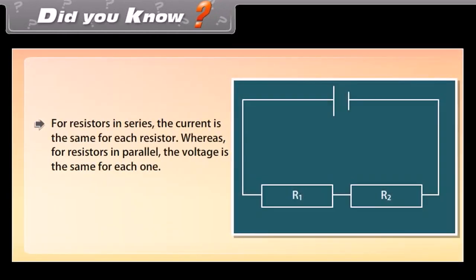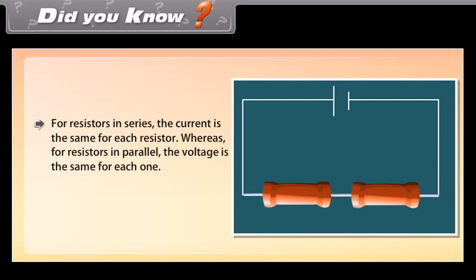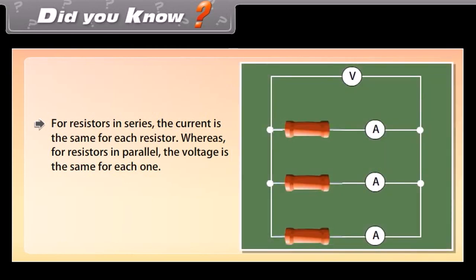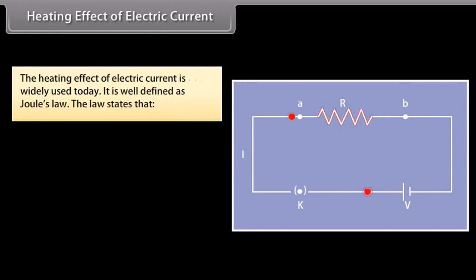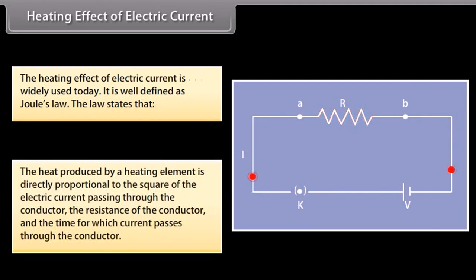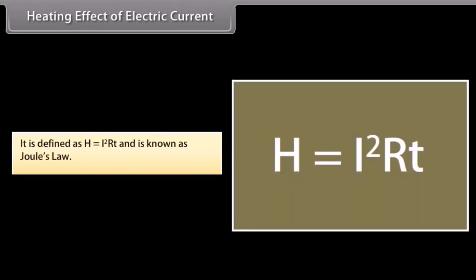The heating effect of electric current is widely used today. This effect is caused when electric current is passed through a conductor, generating heat due to the resistance it offers to current flow. The work done in overcoming this resistance produces heat. The heat produced is directly proportional to the square of the electric current, the resistance of the conductor, and the time for which current passes. This is defined as H = I²RT and is known as Joule's Law.